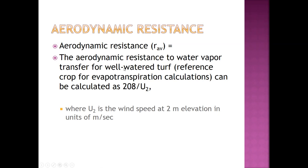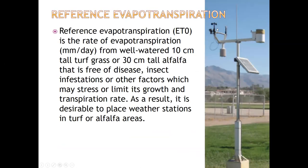The aerodynamic resistance to water vapor transfer for well-watered turf is calculated as 208 divided by the wind speed at 2 meters elevation. AZMET weather stations measure wind at 3 meters elevation, so a conversion to 2-meter wind speed is required. This is done using a logarithmic equation, because wind speed follows a logarithmic profile with height above ground.